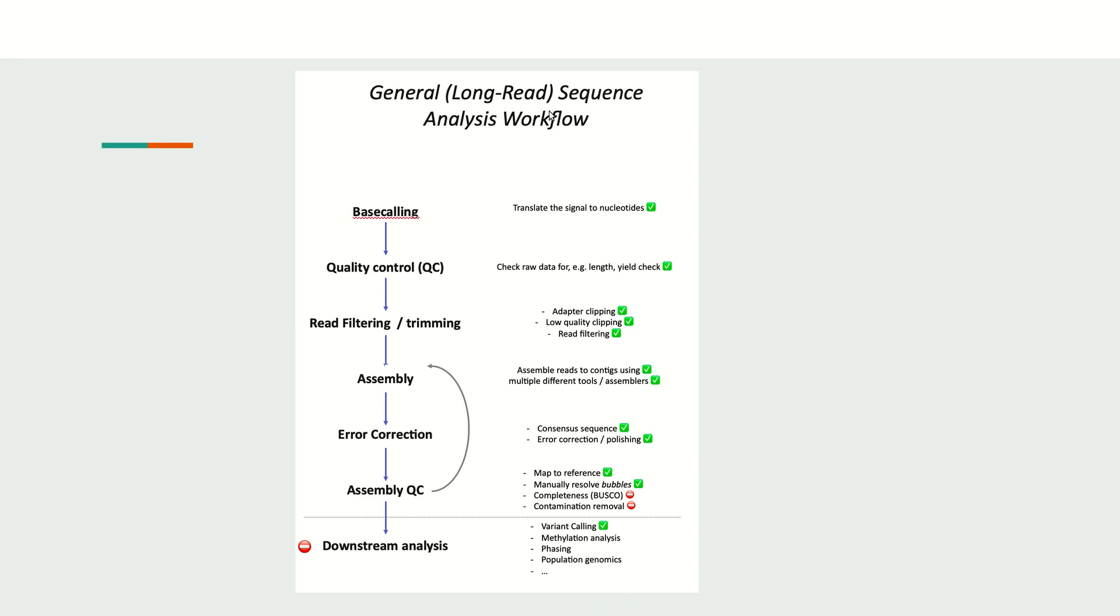This is the typical assembly workflow: first, after the sequencing, the base calling leads to converting the raw signal to FASTQ format, the sequence as well as the quality associated with it. Once we get the FASTQ file, then we do basic quality control checks.